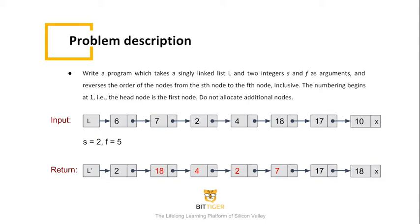The sublist in this problem would be 7, 2, 4, and 18. We need to return a linked list of L with a reversed order of the sublist: 18, 4, 2, and 7.